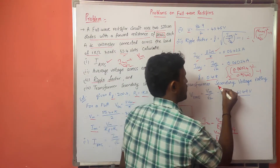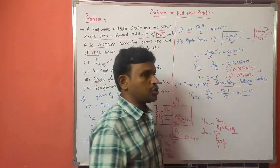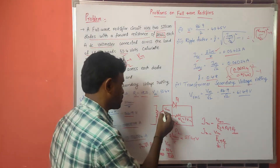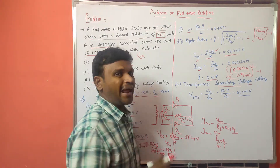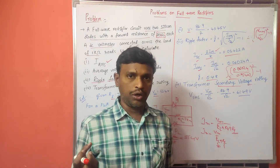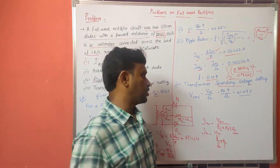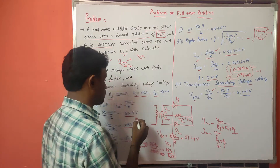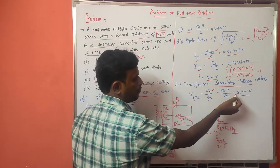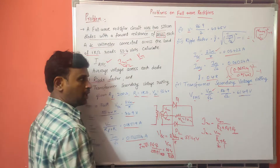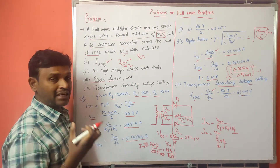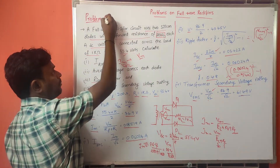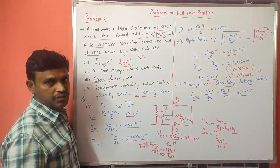Next is the transformer secondary voltage rating. The RMS value of the transformer secondary voltage is VRMS = Vm divided by root 2. Vm is 86.9 volts, so substituting gives the transformer secondary voltage rating. This concludes problem number 1 on full wave rectifiers.